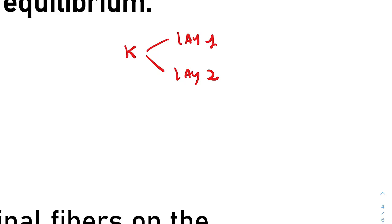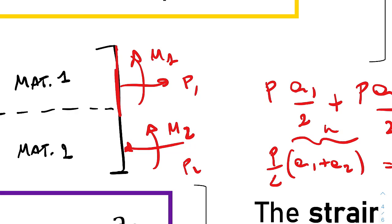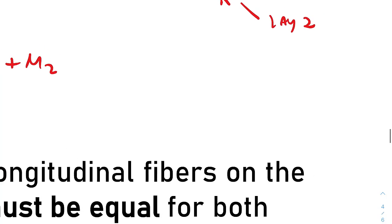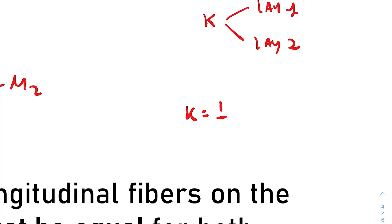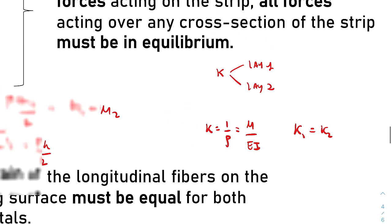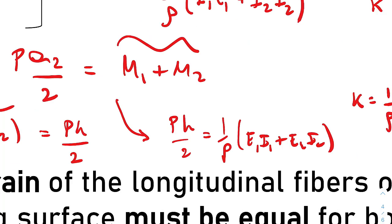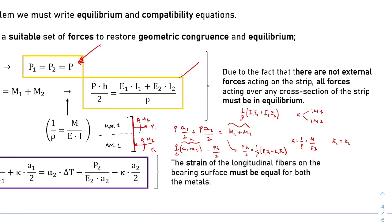This means that a cross-section must remain planar. So we cannot permit that the two layers have a different value of curvature. The curvature was defined as one over rho that is equal to M over flexural rigidity. But since kappa1 is equal to kappa2, what we can write is that M1 plus M2 is equal to 1 over rho times capital I1 capital E1 plus capital I2 capital E2. And this is the second result here.